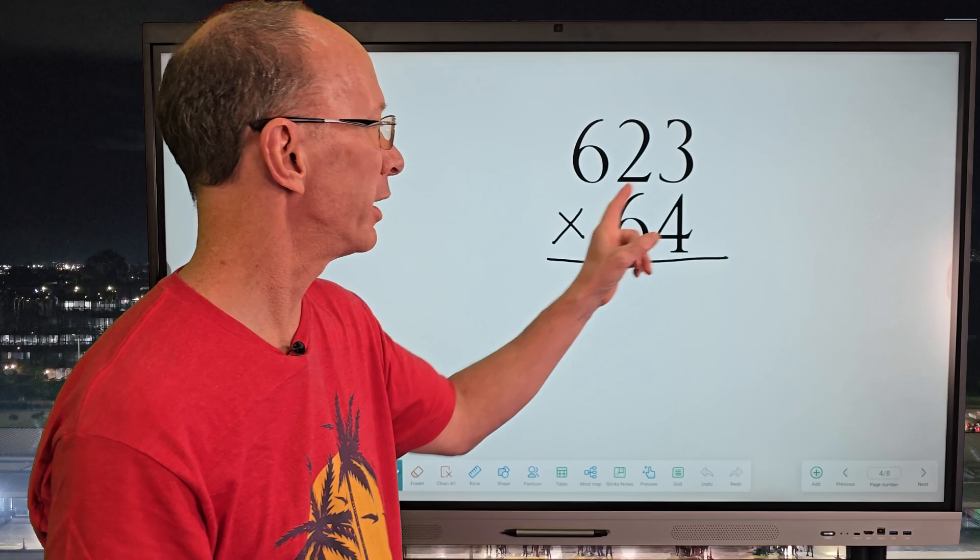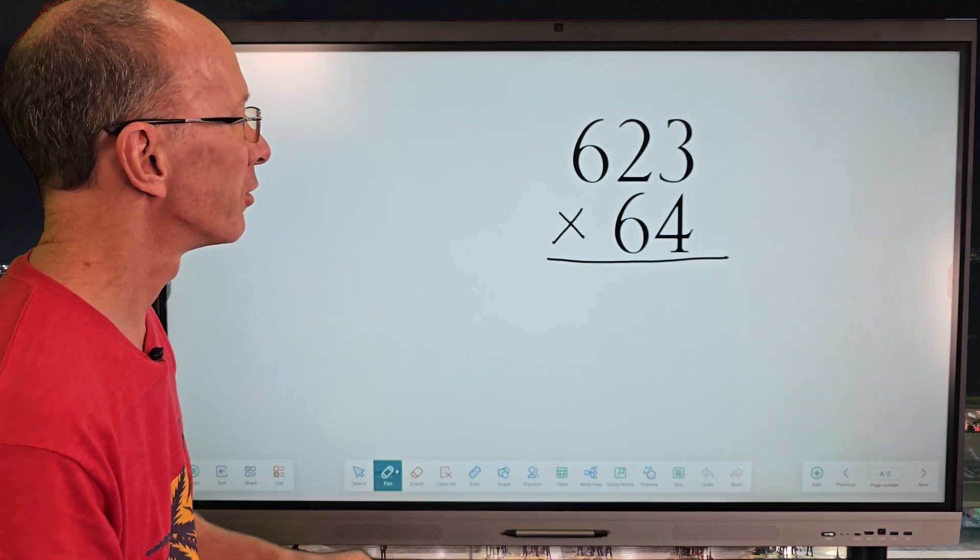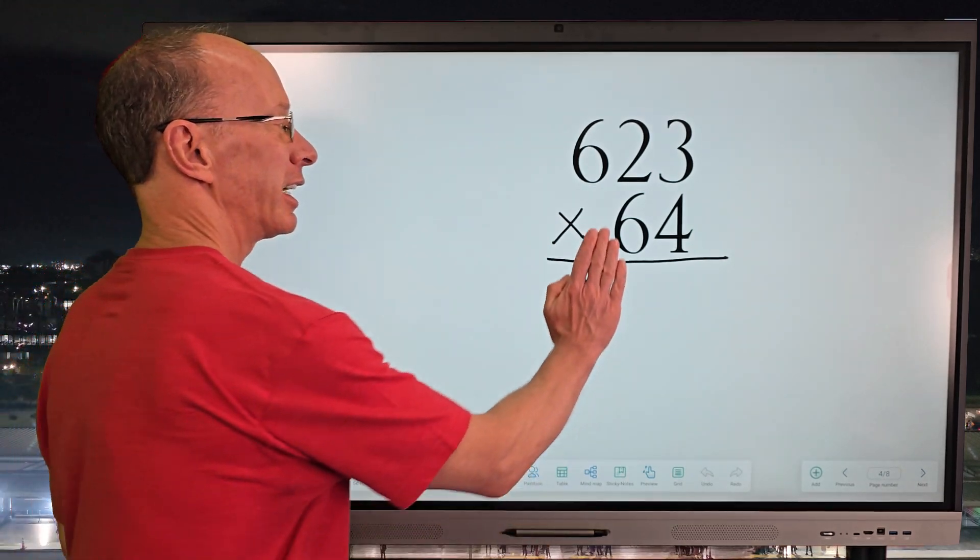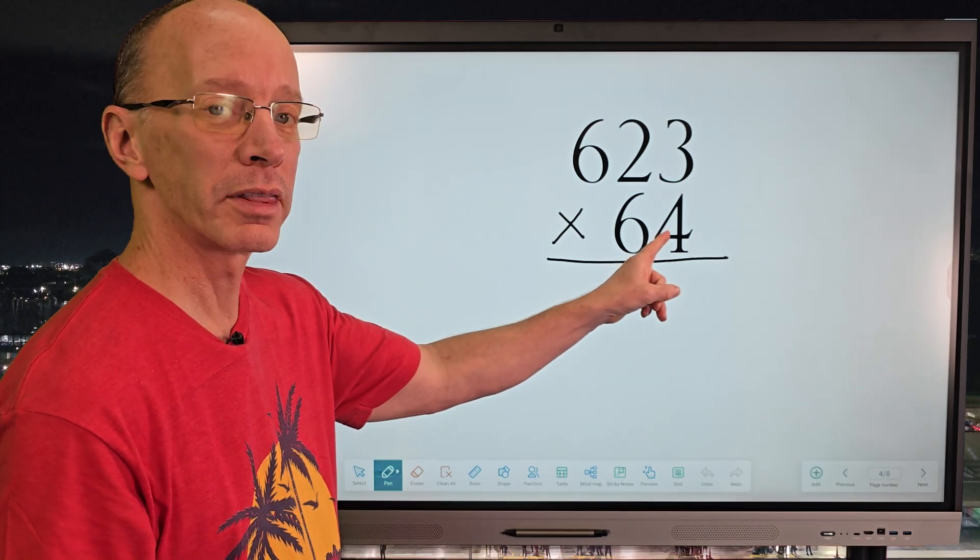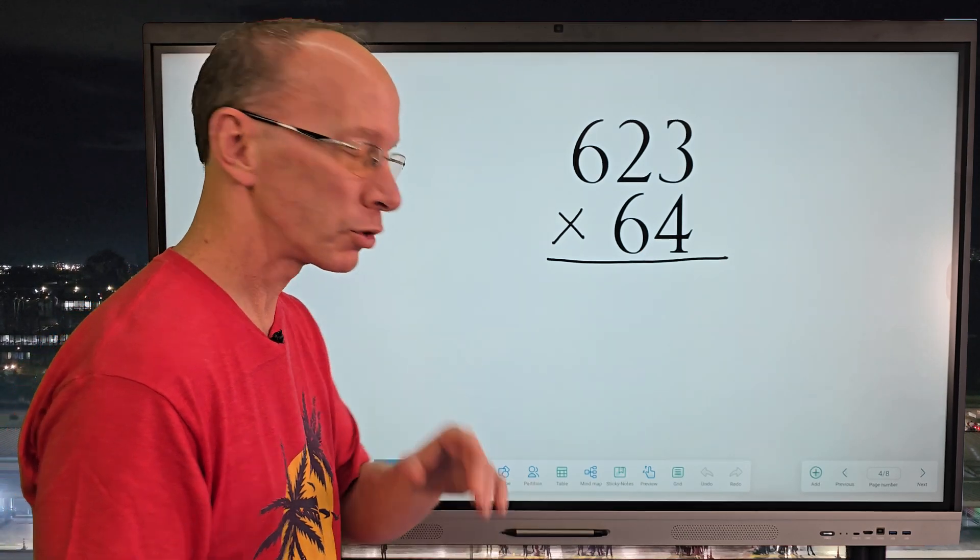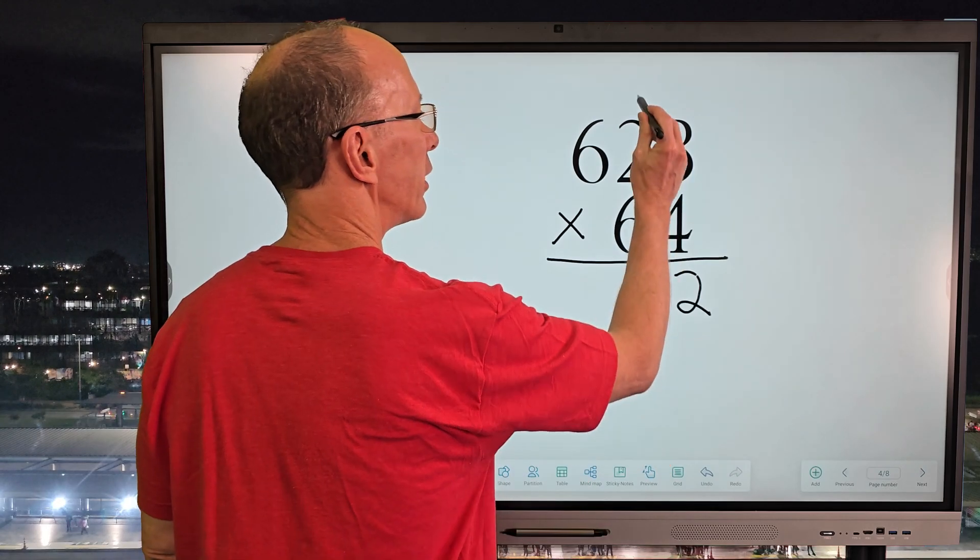We're going to be doing 623 times 64. Ready to get started? Let's do it. So first of all, when you multiply big numbers like that, just ignore this number right there and just start multiplying with this number here. So let's go ahead and multiply 4 times 3 equals 12. I'm going to go ahead and put the 2 right here. Carry the 1.